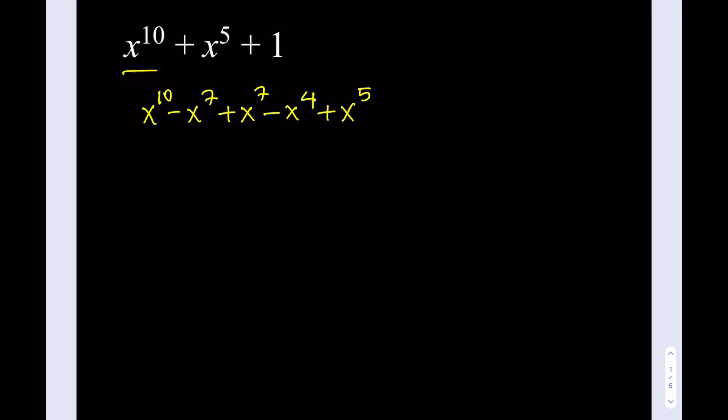We're going to subtract x squared, then add x to the 4th power back in. Since we subtracted x squared we also need to add it back as plus x squared, and finally we add the 1. This should all be balanced now. Let's check: negative x to the 7th and positive x to the 7th cancel; negative x to the 4th and positive x to the 4th cancel; x to the 5th is there; negative x squared and positive x squared cancel; and 1 remains. All is good.